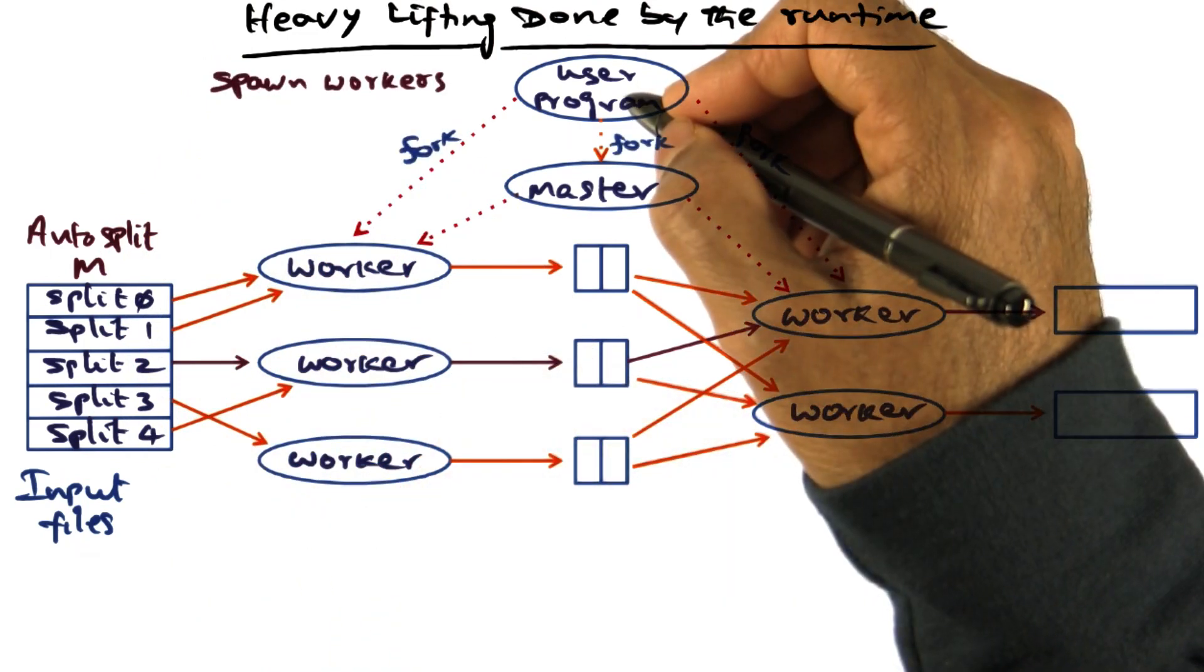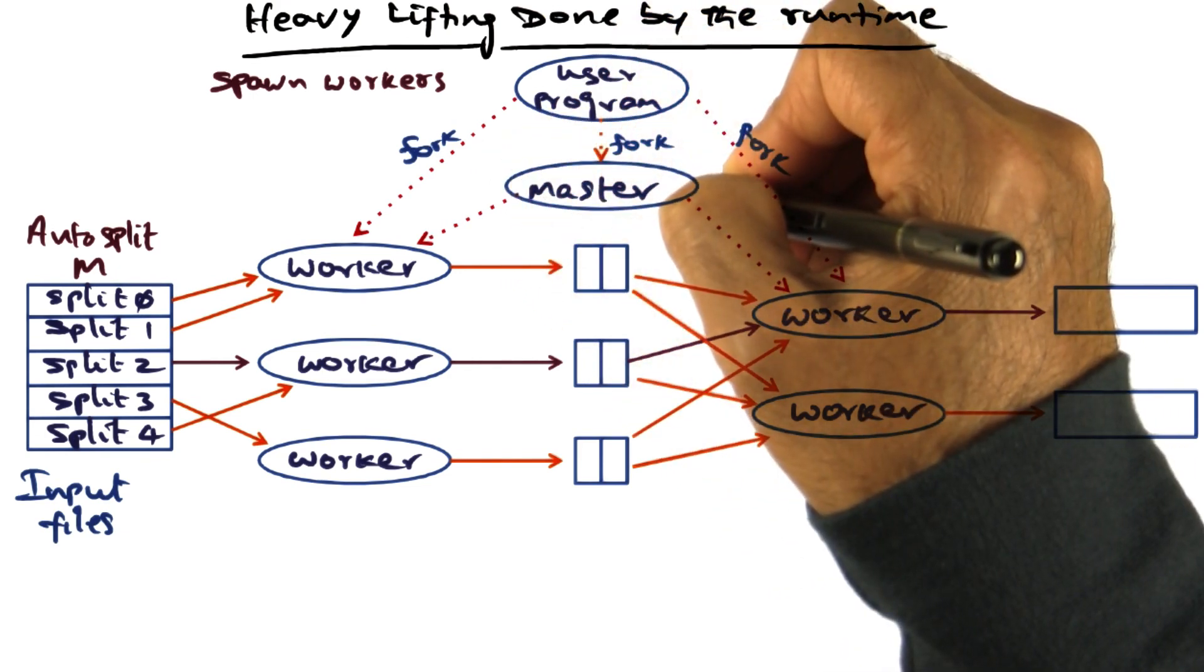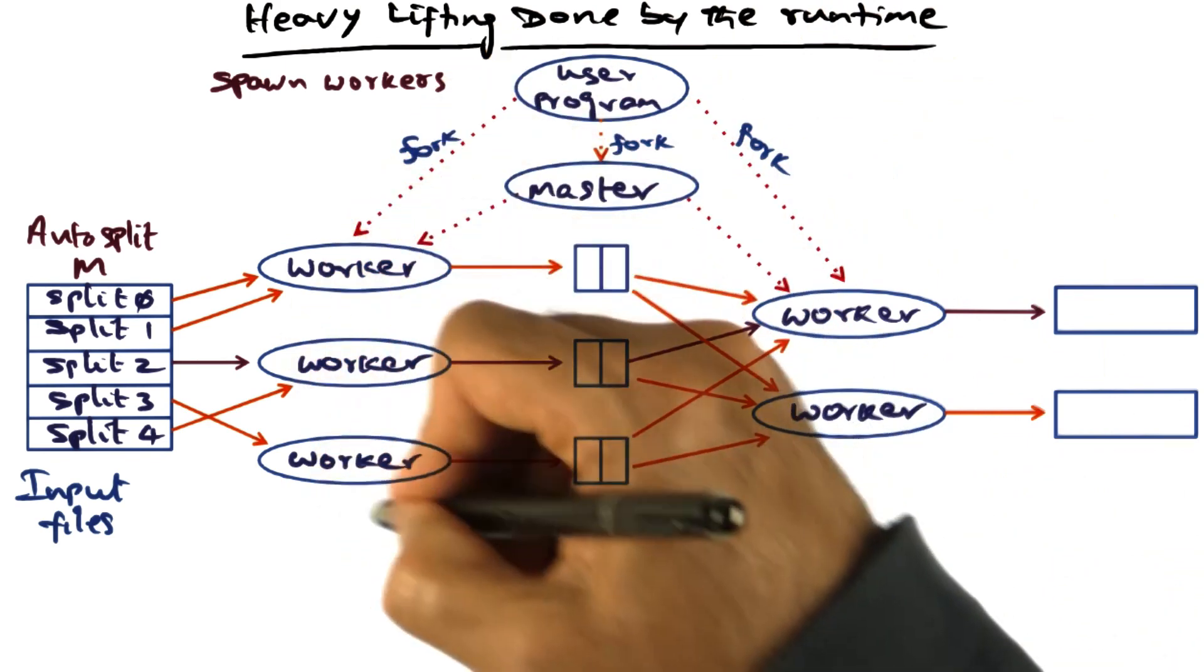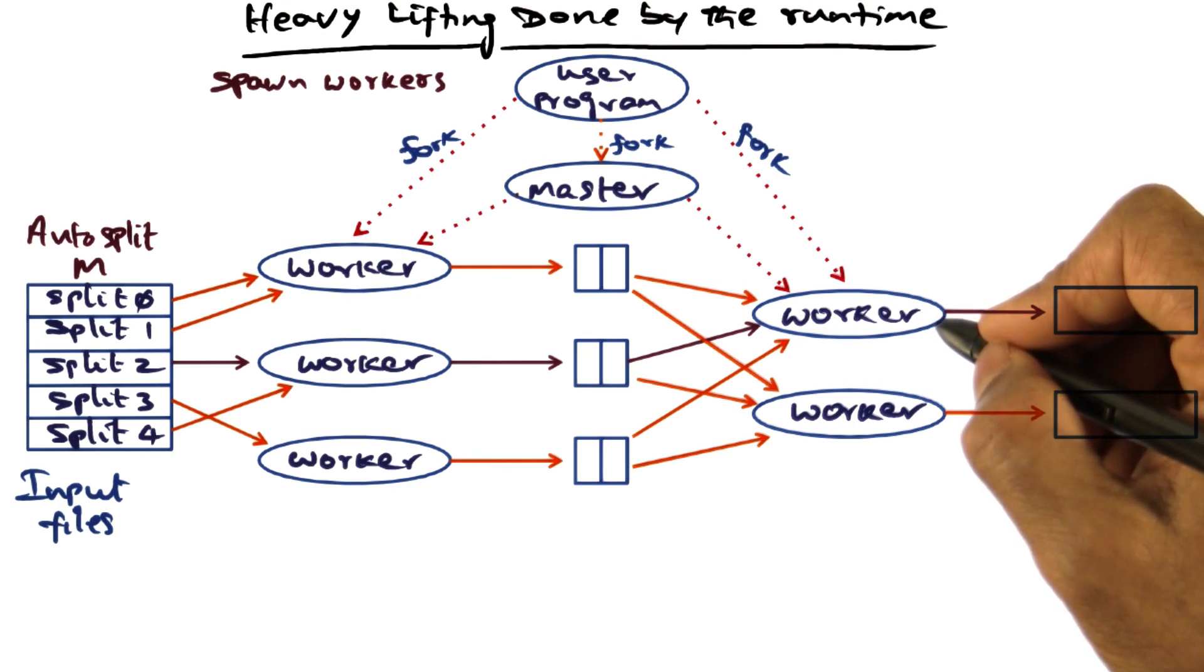The next thing that happens in the programming environment is to spawn the master for this particular MapReduce computation and all the worker threads that are going to carry out the work involved in map functions and reduce functions.